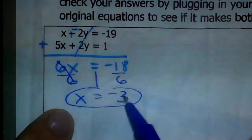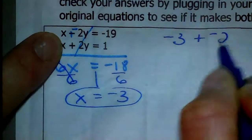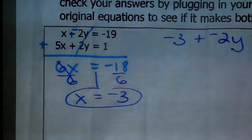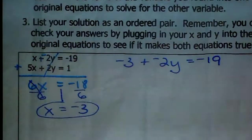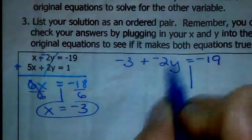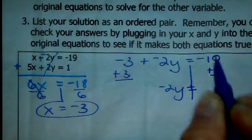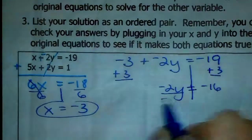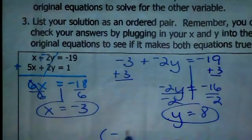If X is negative 3, I'll use the equation where X is already by itself: negative 3 plus negative 2y should equal negative 19. It doesn't matter which equation you choose — either one will give the same Y value because the ordered pair satisfies both equations. To solve for Y, I need to get rid of the constant first, so I add positive 3. Negative 2y equals negative 16; divide each side by negative 2, and Y equals 8.